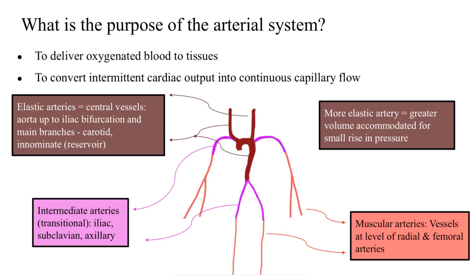What is the purpose of the arterial system? Number one, it is to deliver oxygenated blood to the rest of the tissues, and secondly, to convert the intermittent cardiac output, or the pulsatile nature of the heart, into a continuous capillary flow in order to distribute this oxygenated blood to the rest of the tissues.